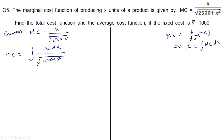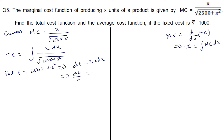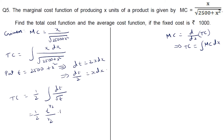We can use integration by substitution. Let t equal 2500 plus x squared, so dt equals 2x dx, or dt by 2 equals x dx, which is the numerator. The total cost becomes half integral of dt upon root t, which is t raised to minus half plus 1 upon minus half plus 1, which is t raised to half, plus constant of integration k.